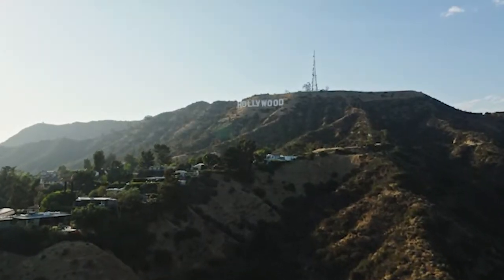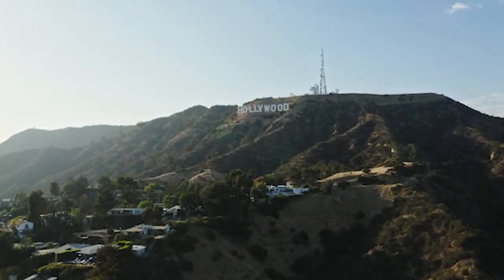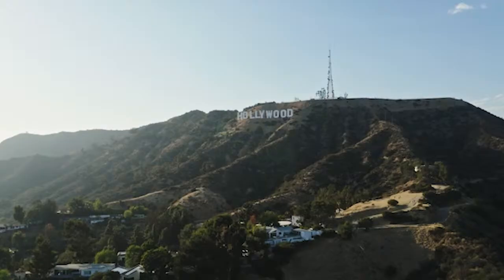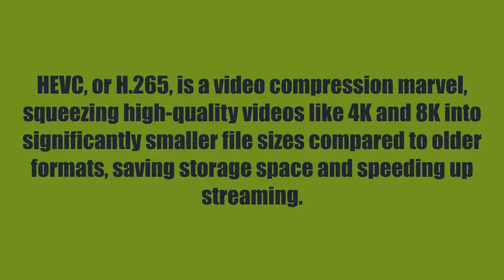H.264 or AVC cannot do very well in these formats because the size of the video in 4K or 8K gets very large — a 2-hour movie in H.264 would take 20 to 30 gigabytes. When we want to stream a 4K movie on our TV or PC, it takes a large amount of bandwidth and also storage space, both on our PC and on servers like YouTube or Netflix. To resolve this issue, HEVC or High Efficiency Video Coding comes into the scene.